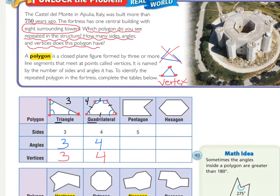The next one is a pentagon. 'Pent' means five. So how many sides does it have? Five. How many angles? One, two, three, four, five. They don't all have to be acute — there can be obtuse angles. And how many vertices? One, two, three, four, five.